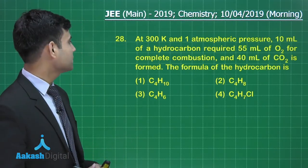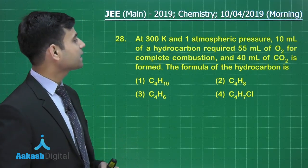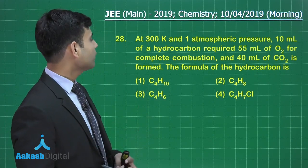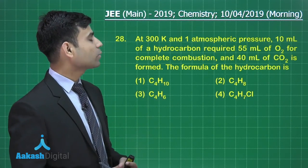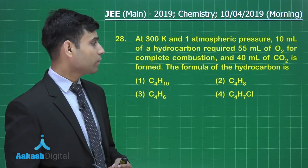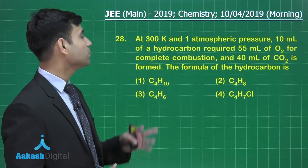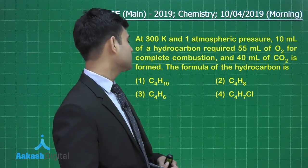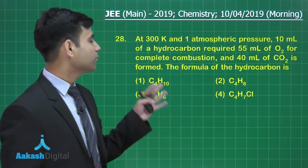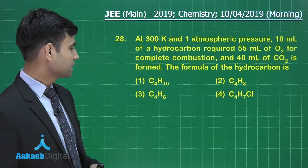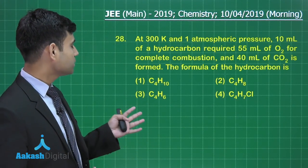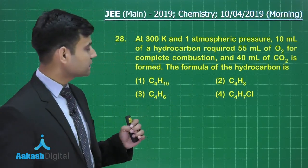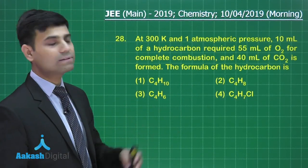The next question says: at 300 Kelvin and 1 atmosphere pressure, 10 ml of a hydrocarbon requires 55 ml of oxygen for complete combustion and 40 ml of carbon dioxide is formed. The formula of the hydrocarbon is — options are C4H10, C4H8, C4H6, and C4H7Cl.